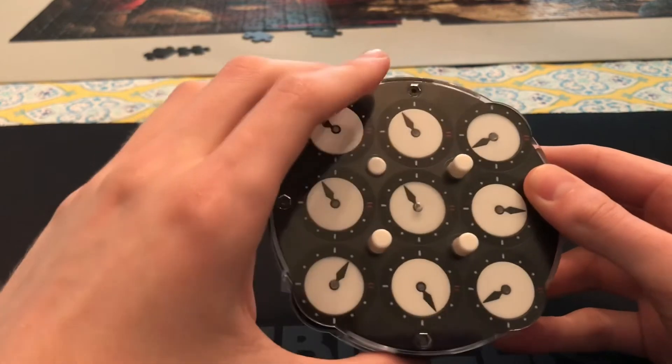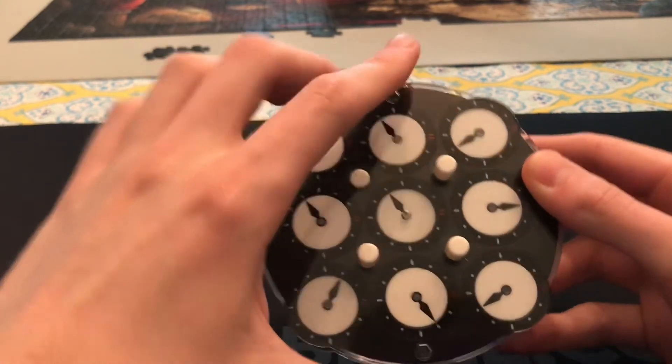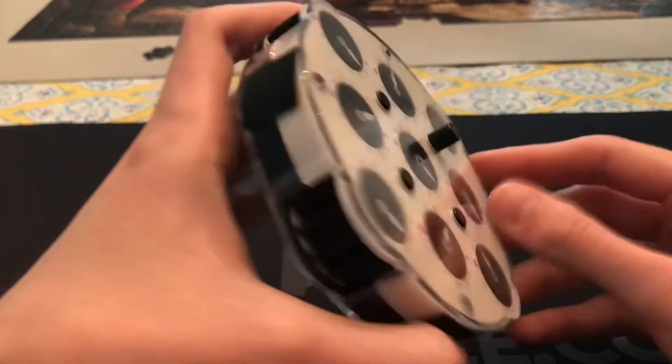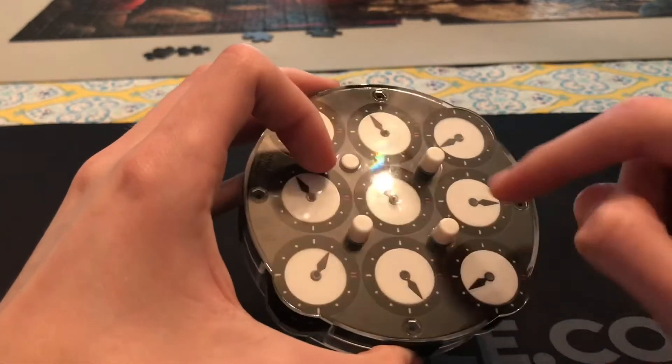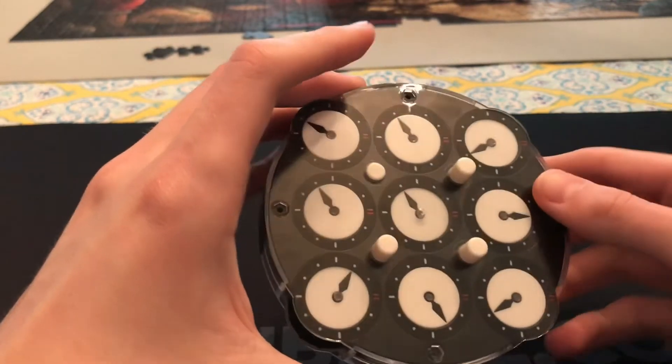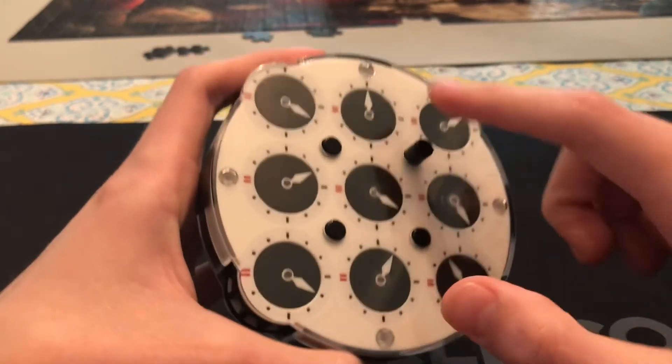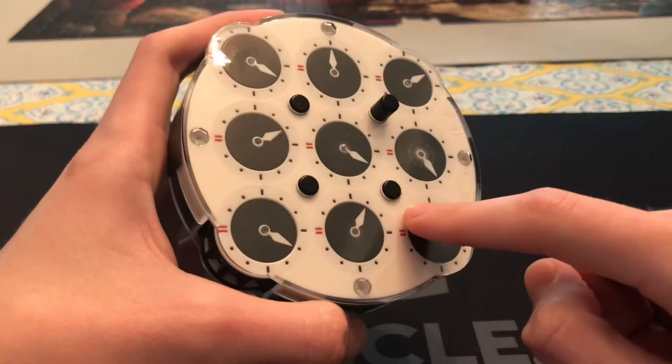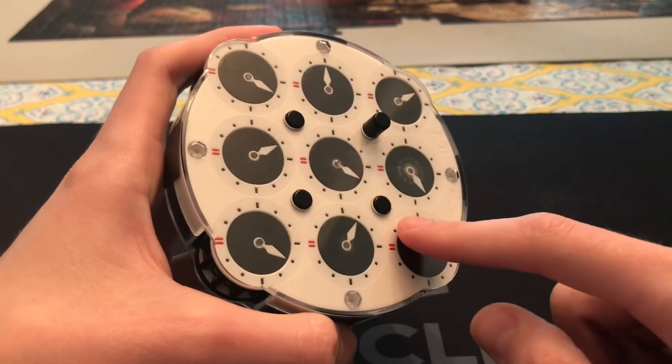Now on to the last scramble. First thing I see is these three, so I'm going to solve in this orientation. Now on to memo, even though the pins on this side aren't great, it's just really good either way.